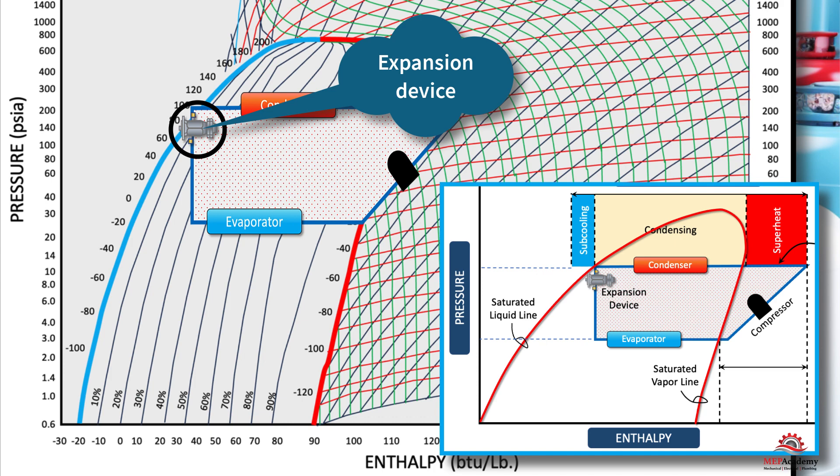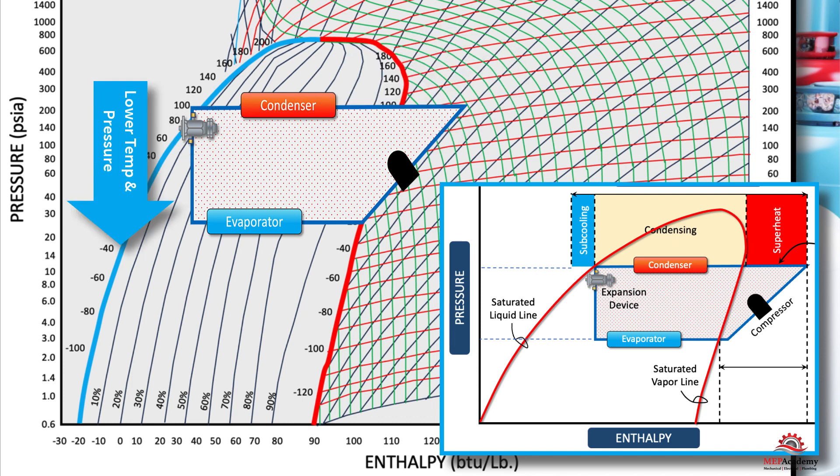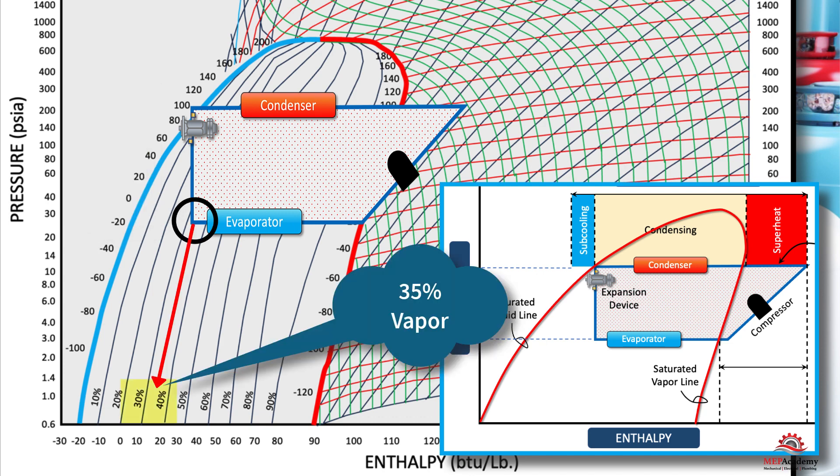As refrigerant pressure is related to temperature, as the refrigerant liquid enters the expansion device some of it flashes causing the temperature to lower. You can see that at the entrance to the evaporator a certain percentage of the refrigerant has already been evaporated and turned into vapor, approximately 35% in our example.